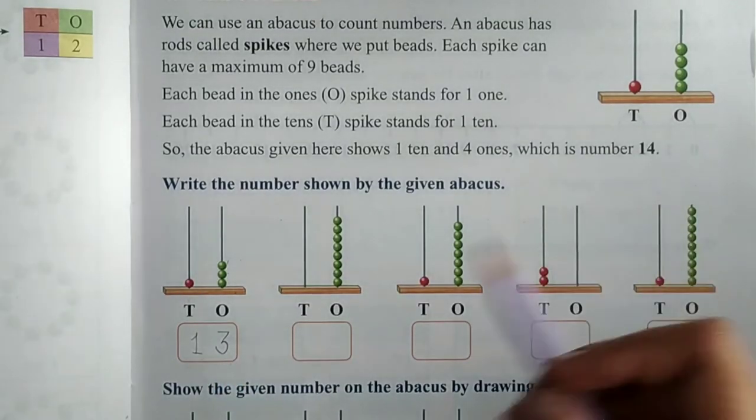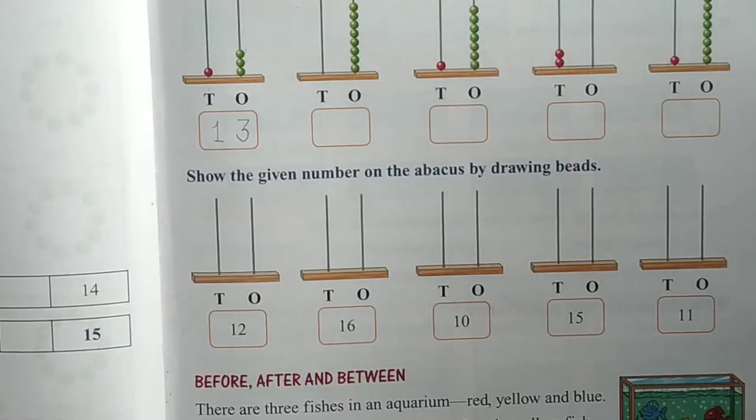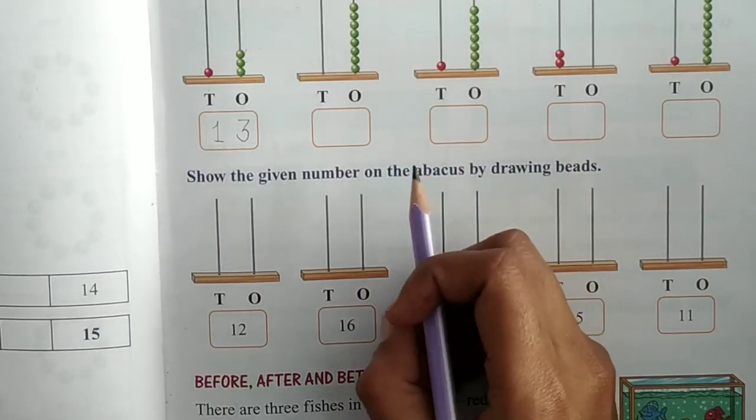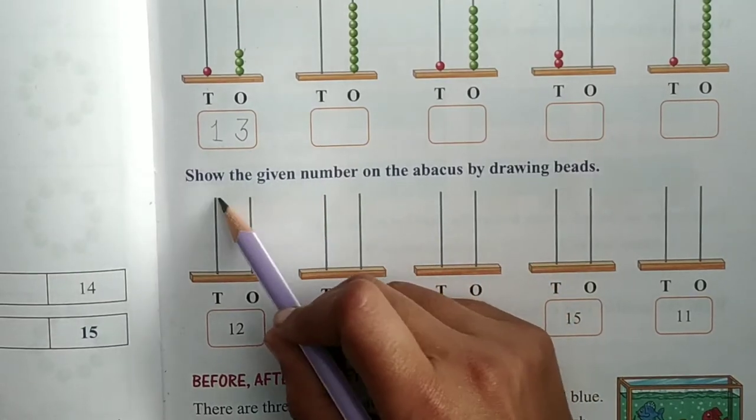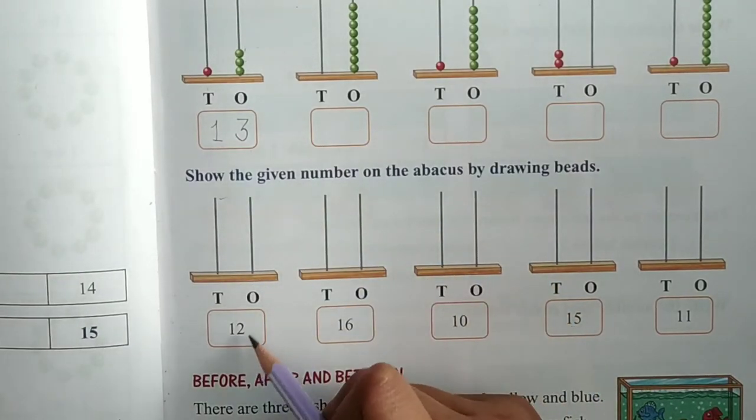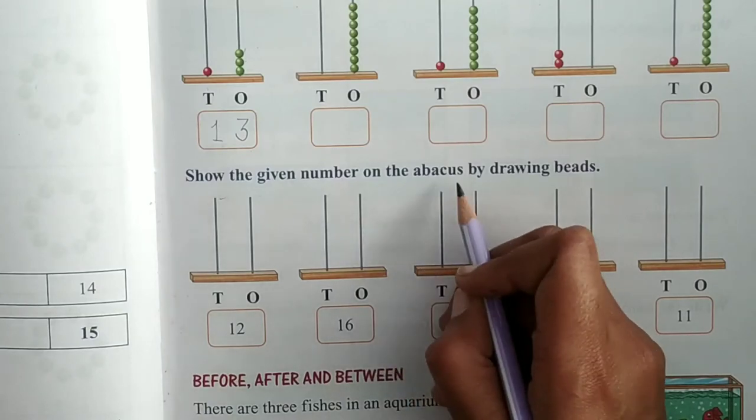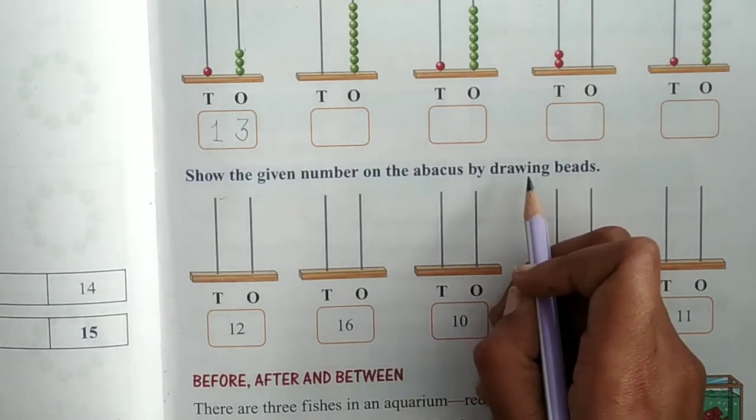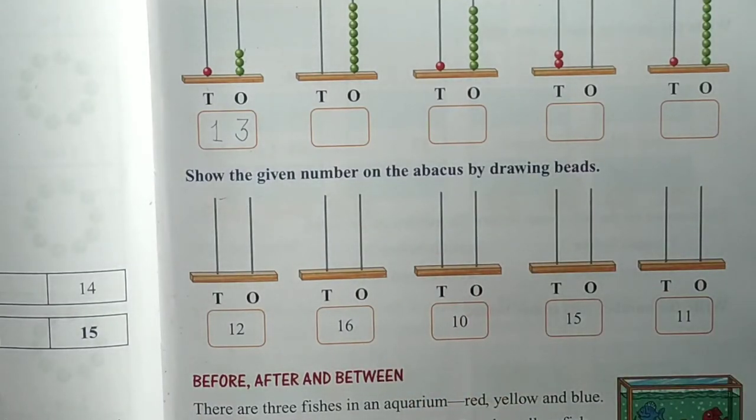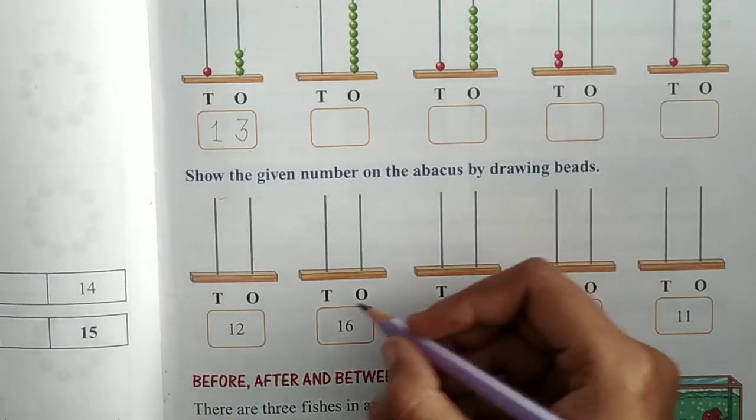So like this, you have to try all these questions. Now read the heading that show the given number, number is given, on the abacus by drawing beads. That means I have to draw beads now.